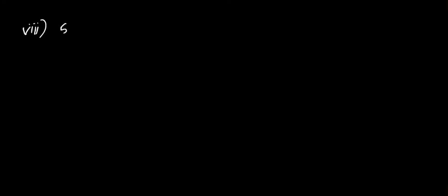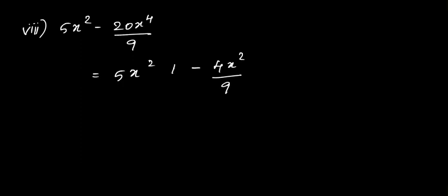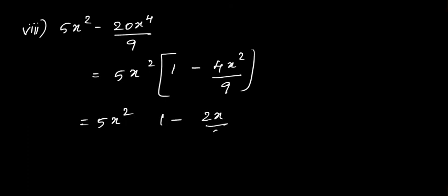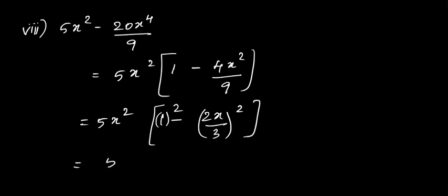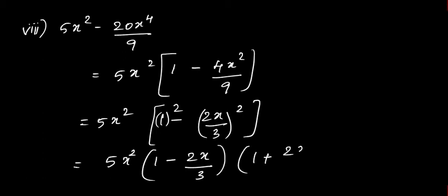Eighth question: 5x² - 20x⁴/9. Take 5x² as common, so we get 1 - 4x²/9, which can be written as 1² - (2x/3)². Write 5x² as it is; expanding using the a² - b² formula, we get 5x²(1 - 2x/3)(1 + 2x/3).